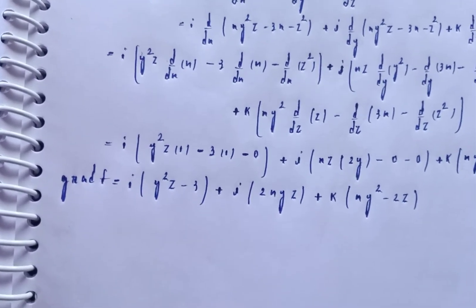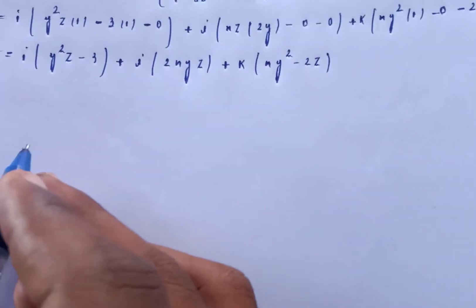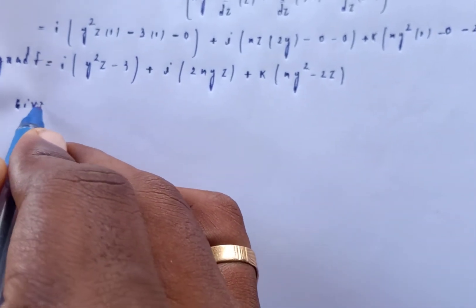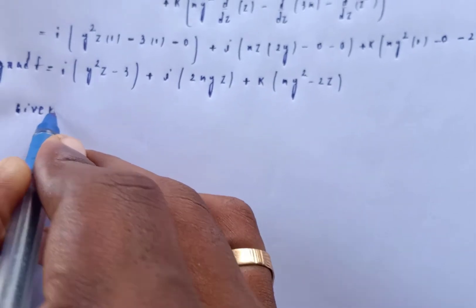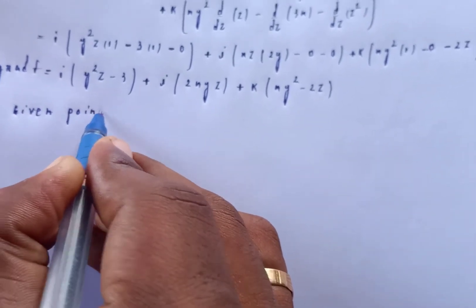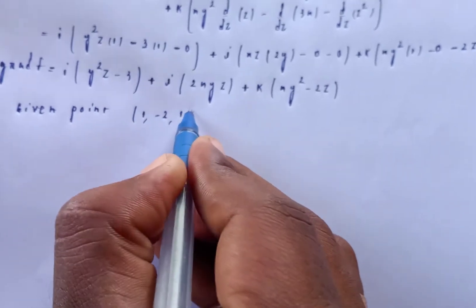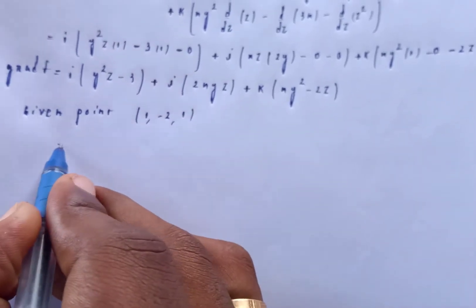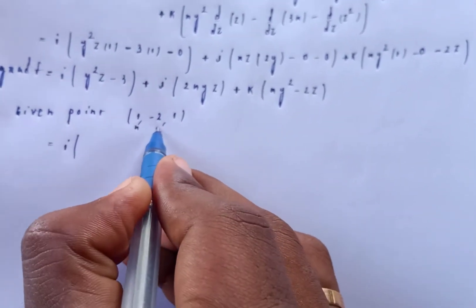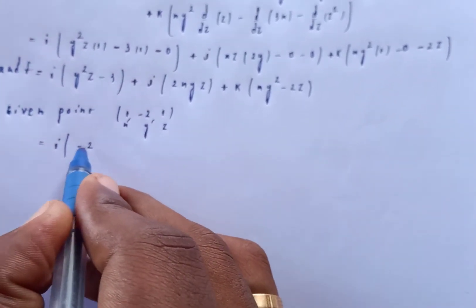Now substitute the given point (1, -2, 1) into the gradient expression for F1.